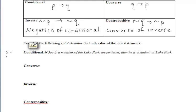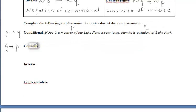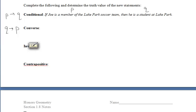If we wanted to rewrite the conditional statement 'if Joe is a member of the Lake Park soccer team, then he is a student at Lake Park,' and write the converse, inverse, and contrapositive of that statement, we would have to recognize the difference between each of those.